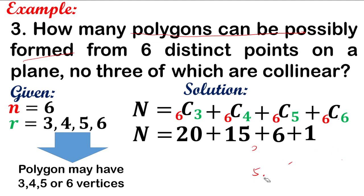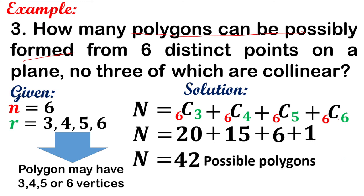Adding all results: 20 plus 15 plus 6 plus 1 is 42. There are 42 possible polygons that can be formed using 6 distinct points, no 3 of which are collinear.